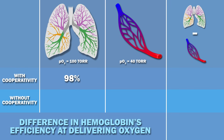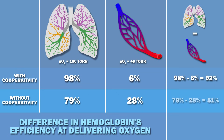In the capillaries of some tissues, the partial pressure of oxygen is 40 torr, and hemoglobin releases oxygen — here only 6% of hemoglobin has oxygen bound to it. The 92% difference is thanks to cooperativity. If hemoglobin's curve were hyperbolic instead of sigmoidal, only 79% of hemoglobin in the lungs would have oxygen bound, and 28% in the capillaries, for a difference of just 51%. So cooperativity means hemoglobin is 92/51%, or 1.8 times more efficient at delivering oxygen.